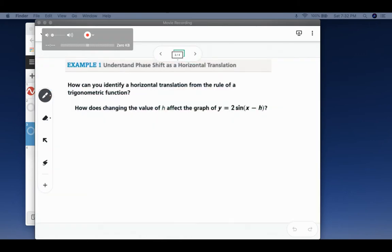So the first thing says, how can you identify a horizontal translation from the rule of a trigonometric function? How does changing the value of h affect the graph of y equals 2 times sine of x minus h? We've looked at things with a, h, and k, so if you think about previous functions you've looked at with the h, this follows the same rule. The only difference is we call this a phase shift instead of just a horizontal shift.